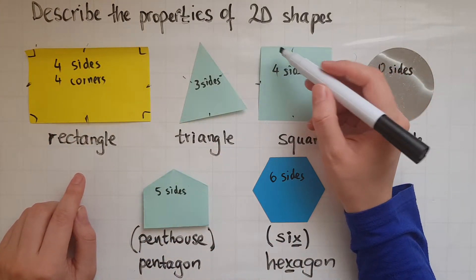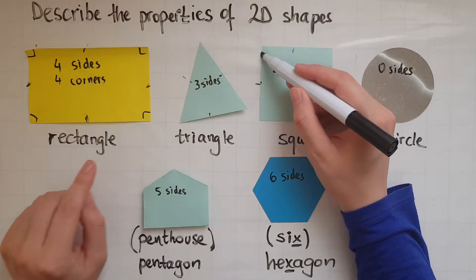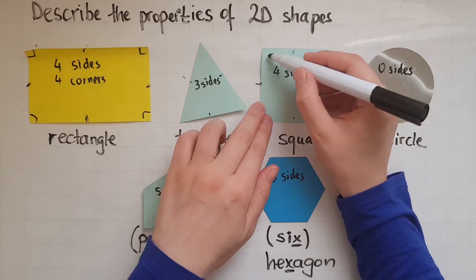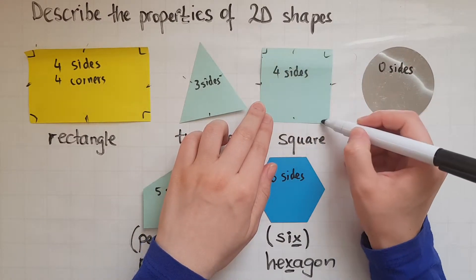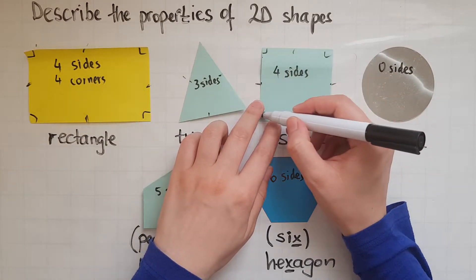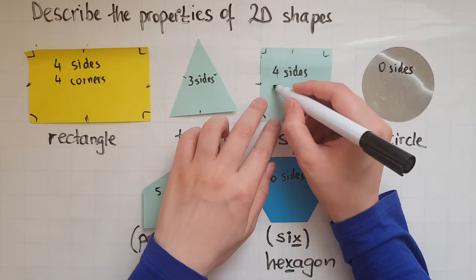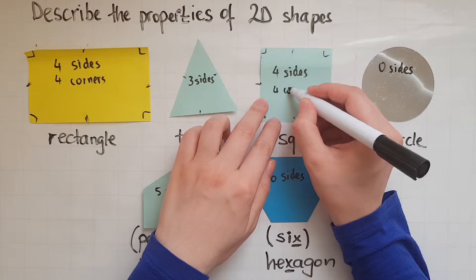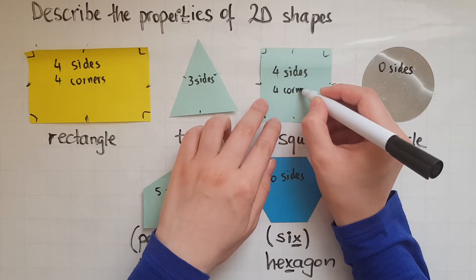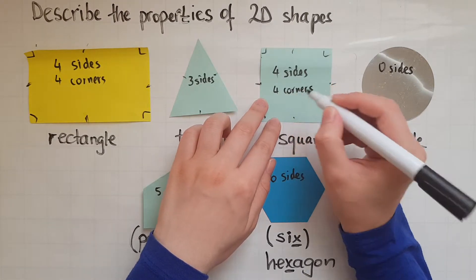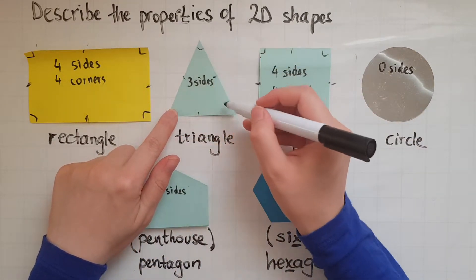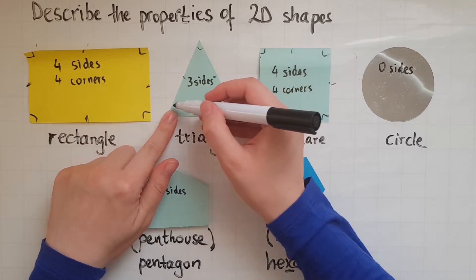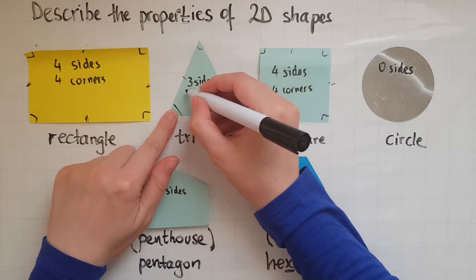In a square as well, we have one, two, three, four corners. In a triangle, we have one, two, three.